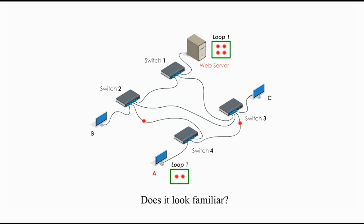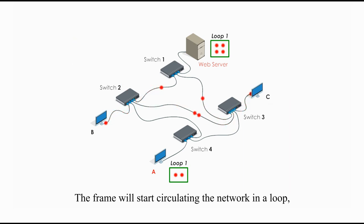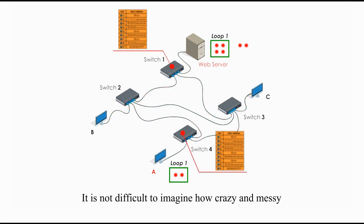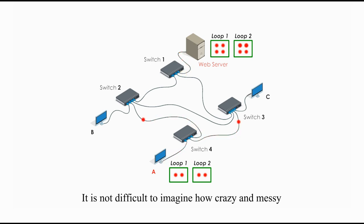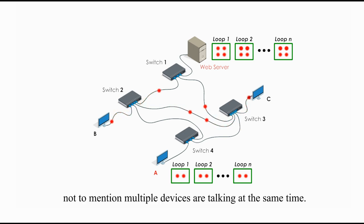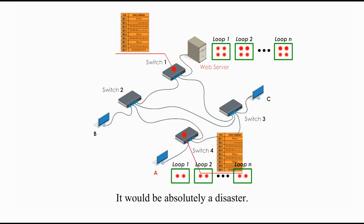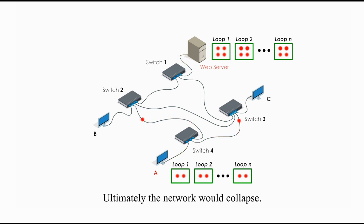Does this look familiar? That was how the frame started its journey at the very beginning, the second round of loop starts. During this one cycle, the web server has got 4 copies, and even the computer A has got 2 copies of its own message. The frame will start circulating the network in a loop, and to make things worse, it would be an endless loop. It is not difficult to imagine how crazy and messy the network would become with just one frame, not to mention multiple devices are talking at the same time. It would be absolutely a disaster. Ultimately, the network would collapse.